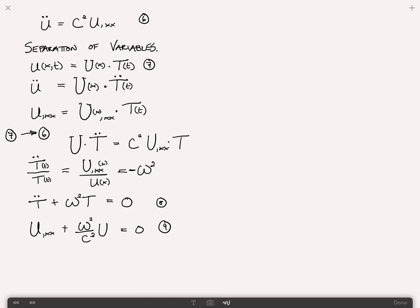So we know what the solutions to these equations are. T of t equals c1 cosine omega t plus c2 sine omega t. And similarly, U of x equals c3 cosine omega x over c plus c4 sine omega x over c.